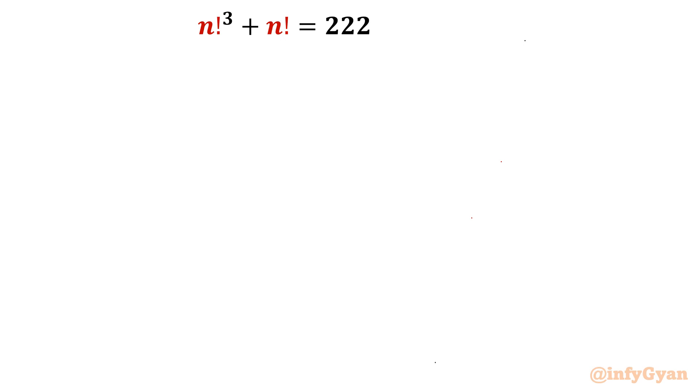While solving this problem, we will see factorial, substitution, the cubic polynomial, and methods of solving cubic polynomials. Let's get started by writing one substitution, which is n factorial equal to x. So our equation will be x cube plus x equal to 222. Take all the terms to the left, then the equation will be x cube plus x minus 222 equal to 0.